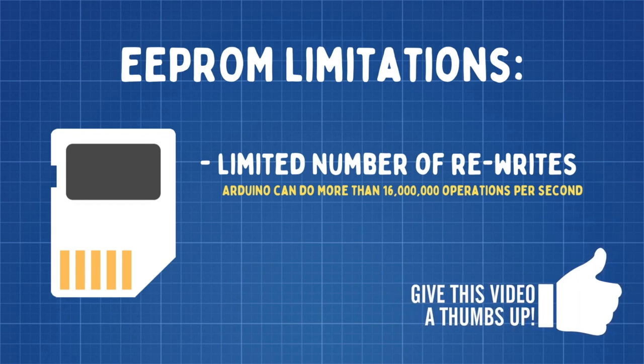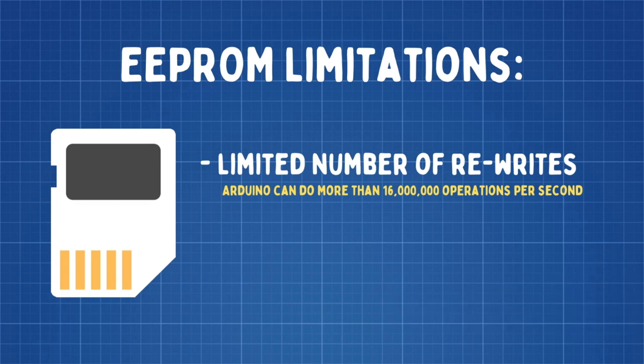First, it has a limited number of re-writes, which means that you can only change its value a certain number of times. EEPROM can typically support between 100,000 and 2 million re-writes, and considering that an Arduino can do more than 16 million operations every second, it would take no time to reach this limit. This is why you need to be very careful with how often you rewrite your EEPROM.